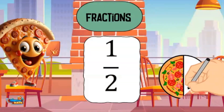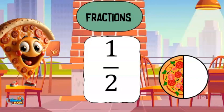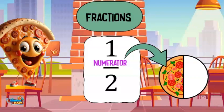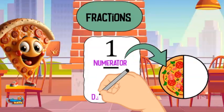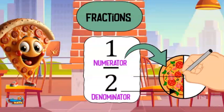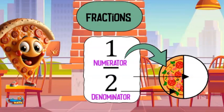Fractions are used to represent a part of a whole. A fraction looks like this. The top number of the fraction is called the numerator, and it represents a part of the whole being represented. The denominator is the bottom number and represents the number of equal parts it takes to make the whole.